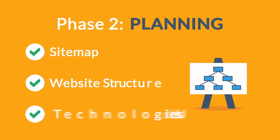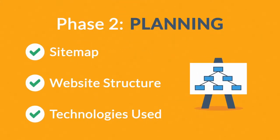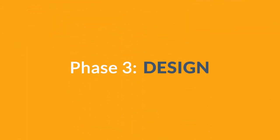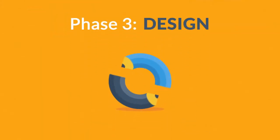Phase 2: Planning. A plan includes a definition of the site map structure and technologies that we're about to use. Phase 3: Design. Not only do we focus on wireframe models and the visual style in this stage...